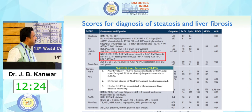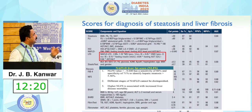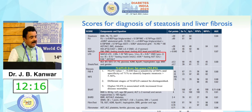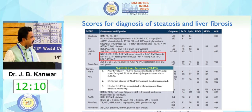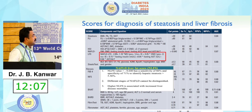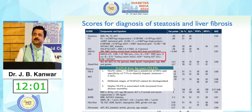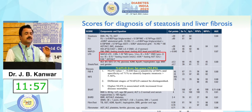Similarly, the NAFLD liver fat score — if it is more than minus 0.640, it can detect hepatic steatosis with 86% sensitivity, but it cannot differentiate between the different stages of NAFLD.